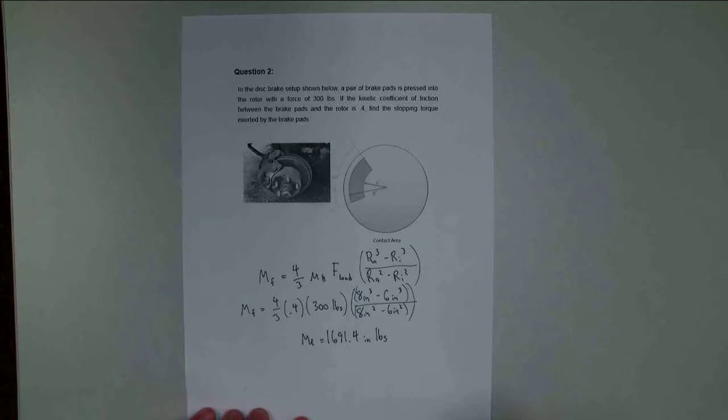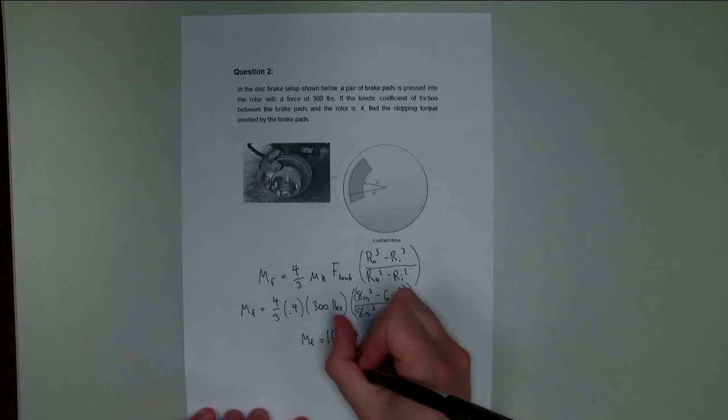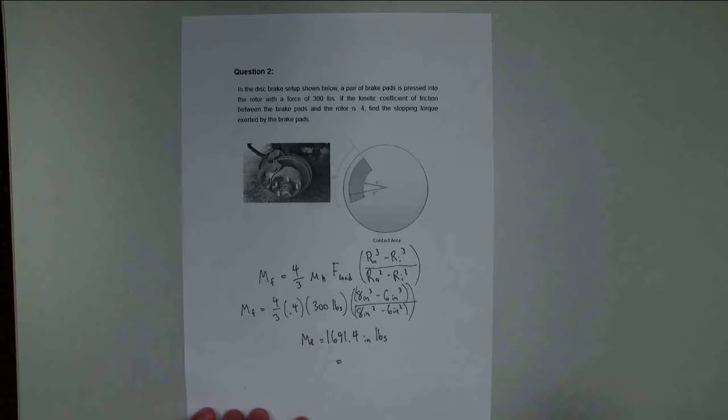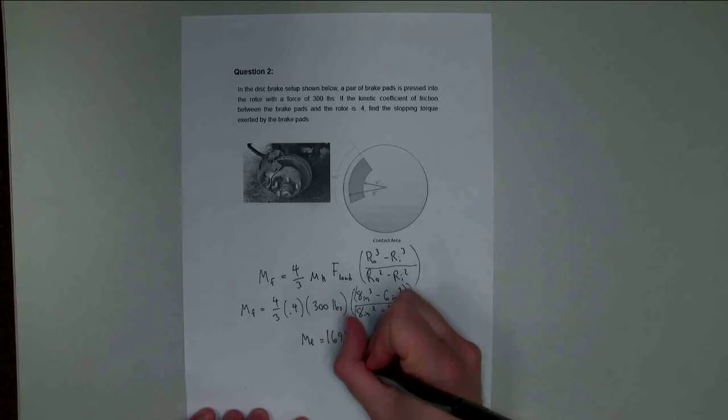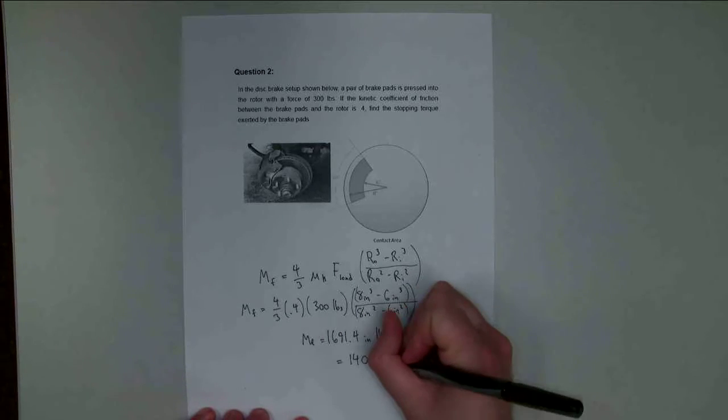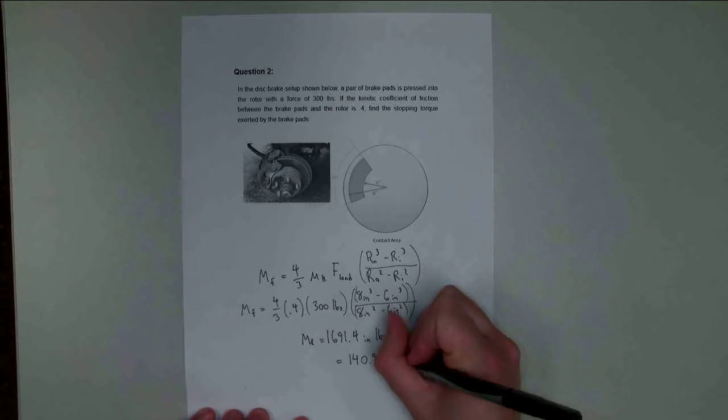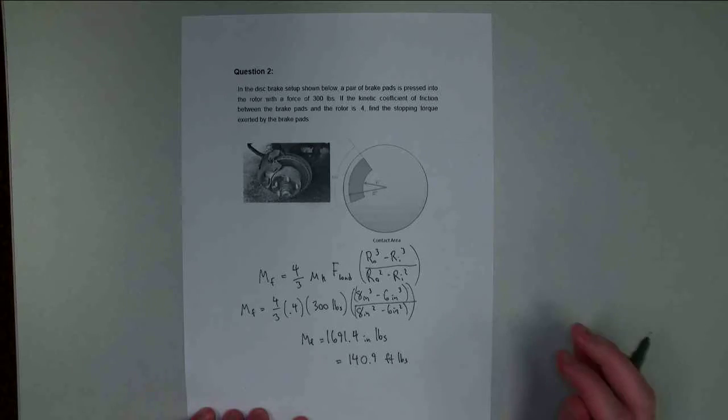If I want to convert that to foot-pounds, which is a more standard unit, I simply divide by 12. I got 140.9 foot-pounds of torque.